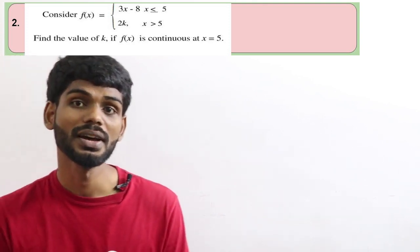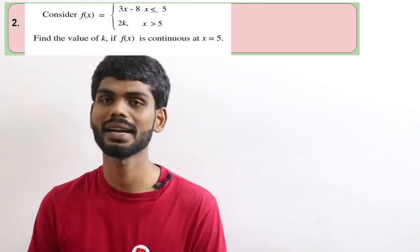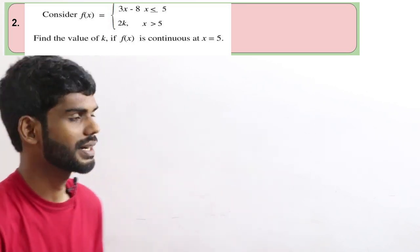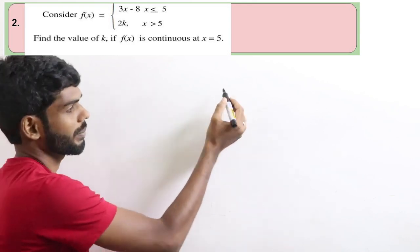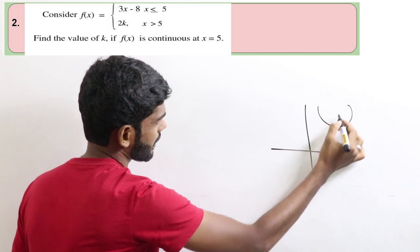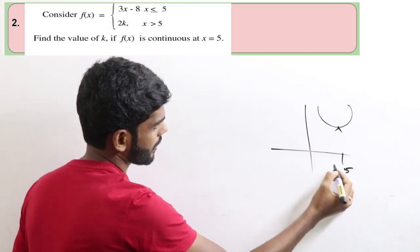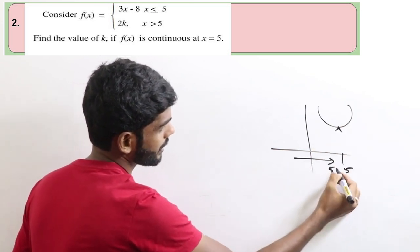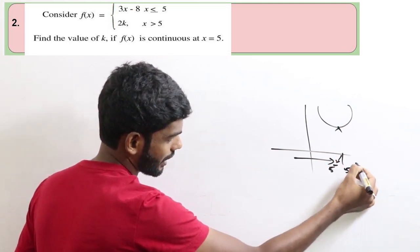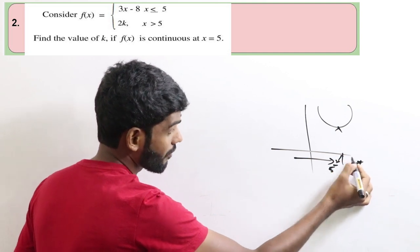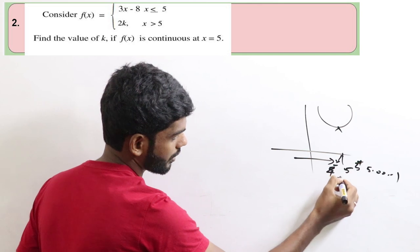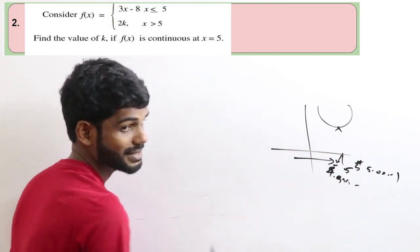This is a simple problem. We learned the graph already — this is a piecewise function. Now, at x equal to 5: 5 minus means approaching from the left, like 4.9999, and 5 plus means approaching from the right, like 5.001. So for 5 minus we use the first piece, and for 5 plus we use the second piece.